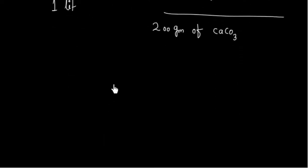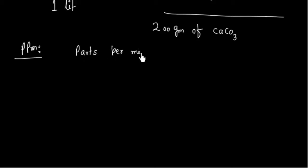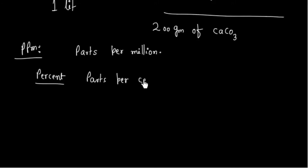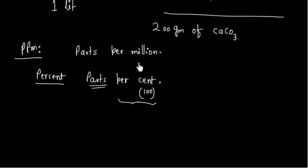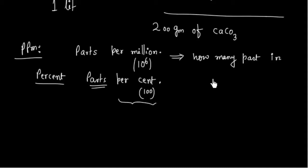The degree of hardness is expressed in terms of PPM, which stands for parts per million. This is similar to percent, which means parts per hundred — cent means 100. PPM means how many parts we have in 10⁶ parts. So 1 PPM means 1 part in 10⁶ parts.